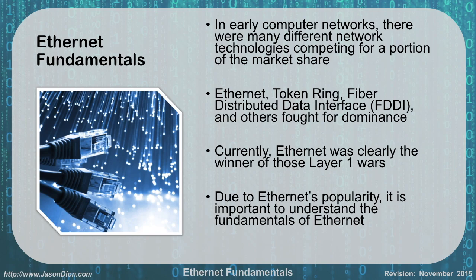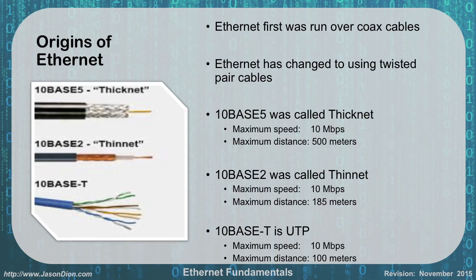In the early computer days there were many different types of network technologies competing for market share. We had Ethernet, token ring, fiber distributed data interface (FDDI), and others all fighting for dominance. Ethernet is the one that won. When we talk about layer one inside our local area networks, it's almost always Ethernet — whether over fiber, Wi-Fi, Cat5, or Cat6 cabling. Due to Ethernet's popularity, it's really important — and important for the exam — to understand how Ethernet works.